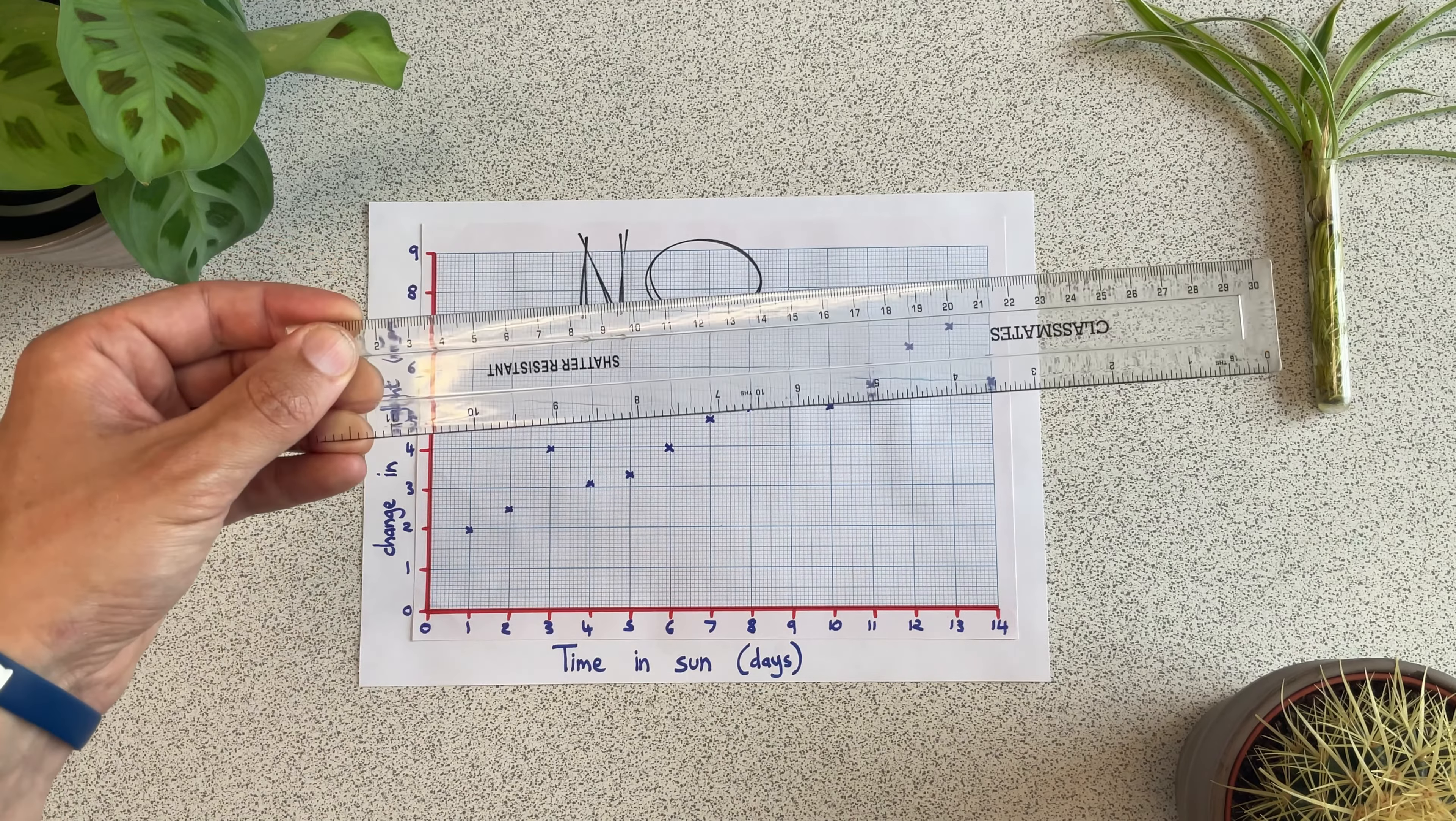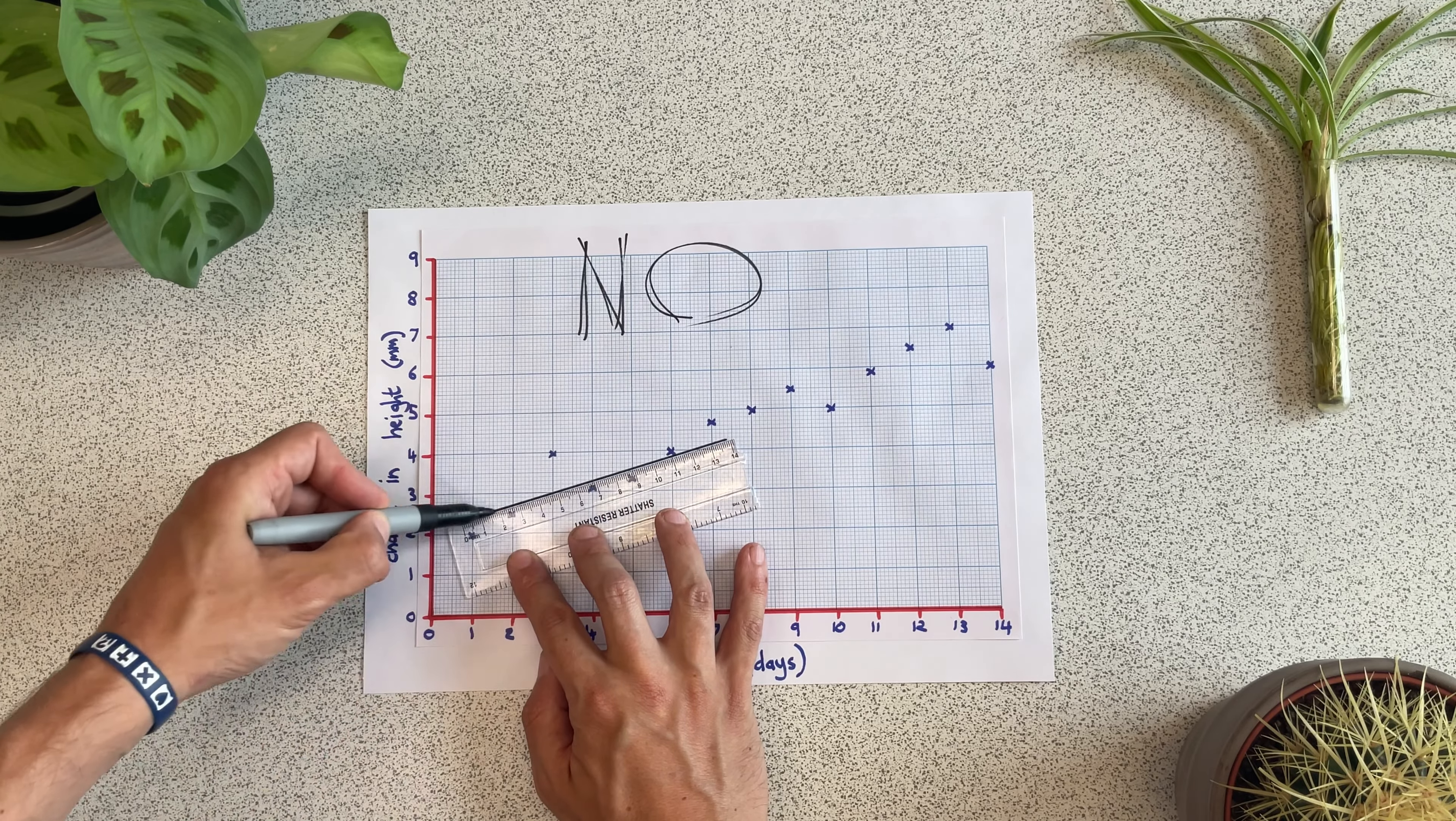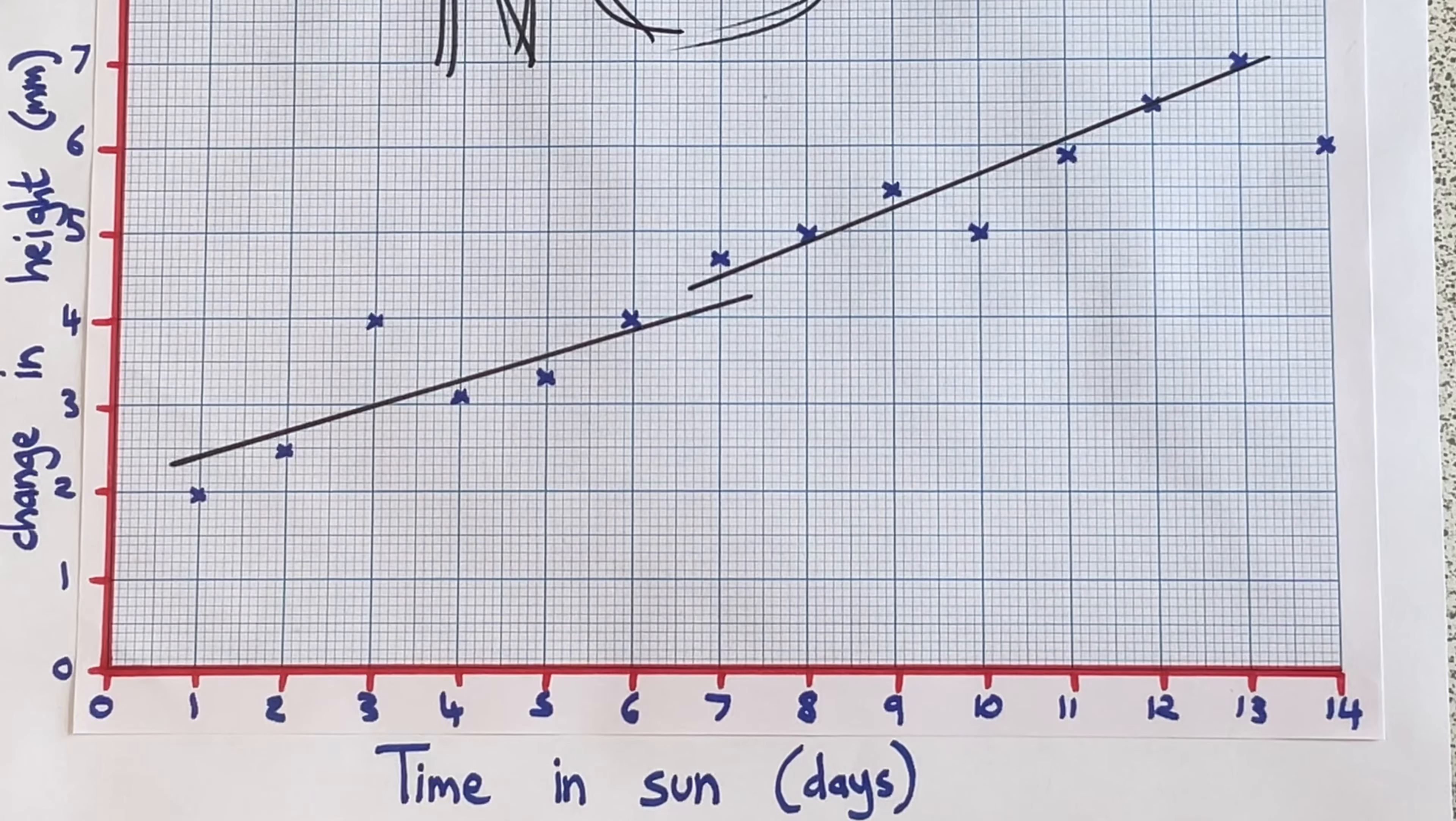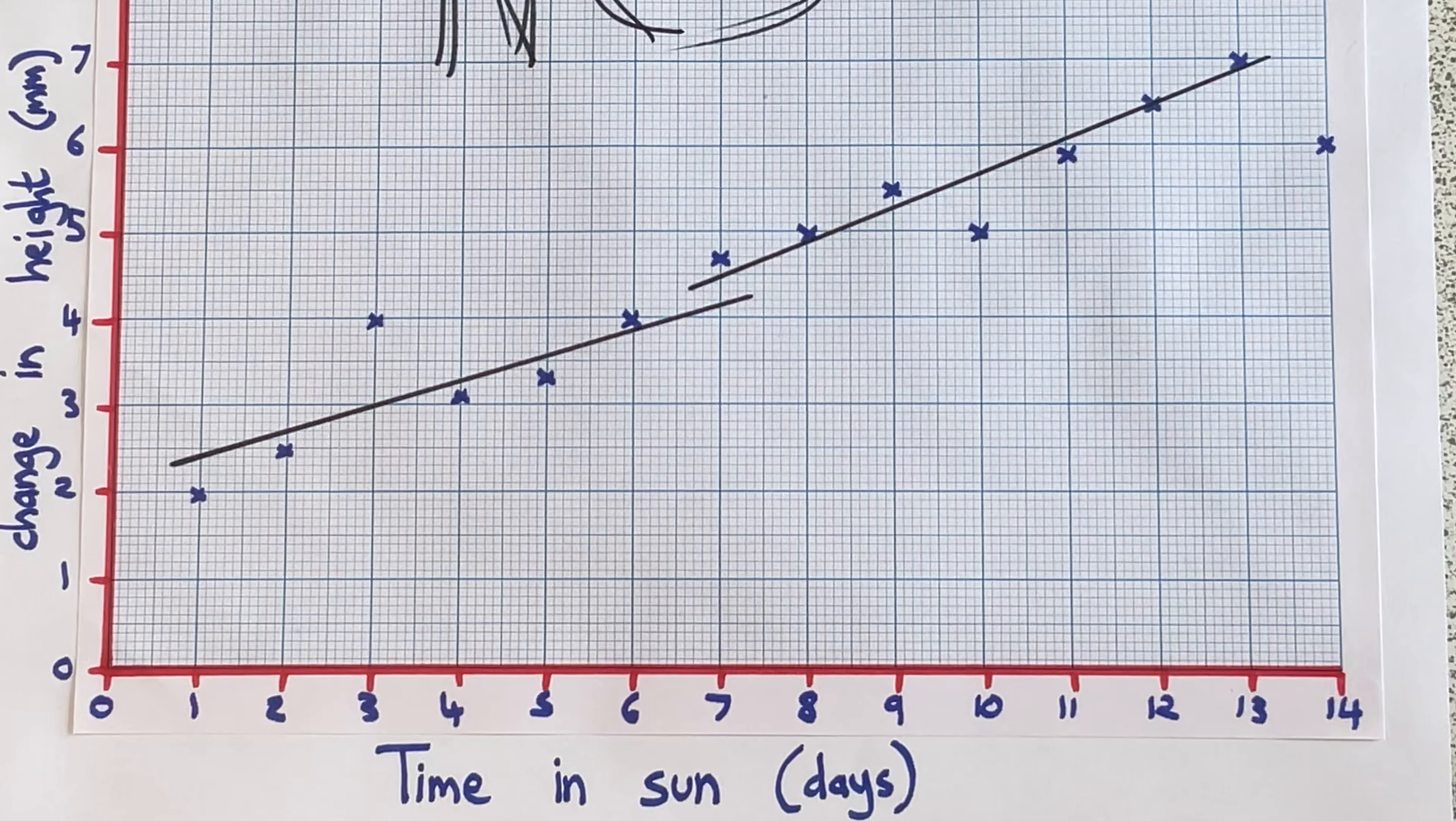If you use a small ruler, this can lead to two different mistakes. You can accidentally cause a split in your line. Why is this a problem? Imagine you wanted to use this graph to figure out how tall plants would be after seven days. Because of the split, there's two possible answers at this point. It's either going to be 4.1 or, using the other line, 4.5.